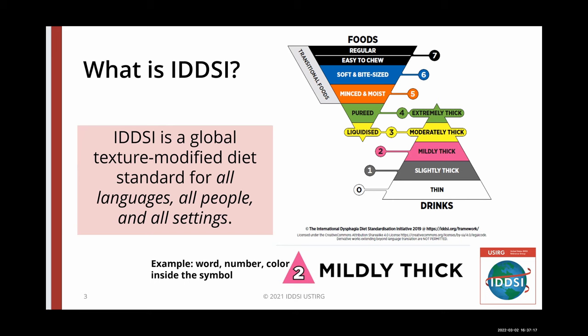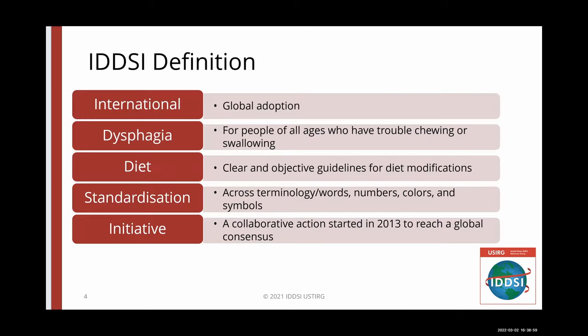Look at the framework. You can see how each level has words, numbers, and colors. At the bottom of the screen is an example of the use of an IDDSI symbol that makes it easy to identify and learn. IDDSI is international because it has so far been adopted into 30 countries and has been translated into 13 languages, with more to come.